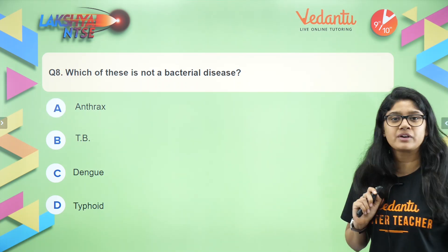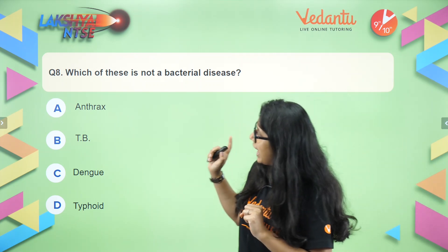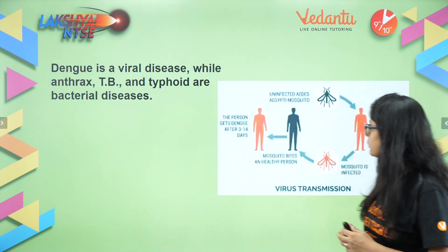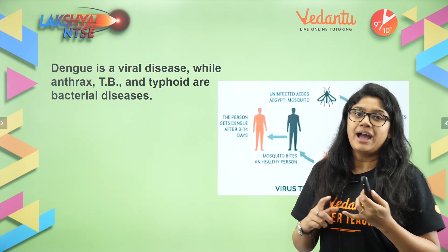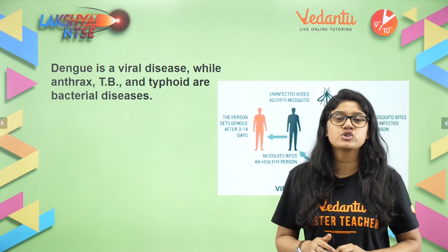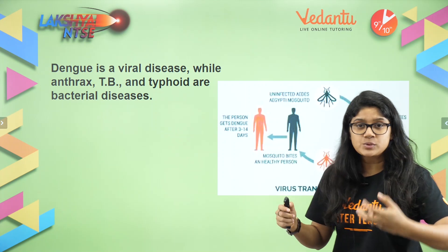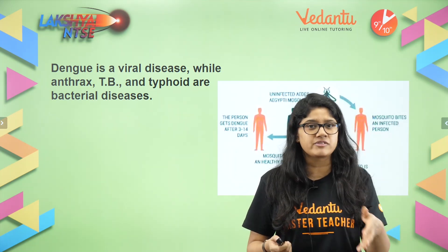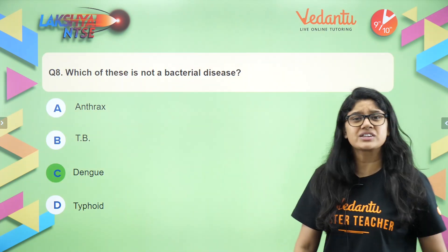Question number eight. Which of these is not a bacterial disease: Anthrax, TB, Dengue, or Typhoid? We know that Dengue is transmitted by the mosquito and is caused by a virus. Anthrax, TB, and Typhoid are bacterial diseases. Dengue is the one which is not a bacterial disease — it is caused by a mosquito bite. The right answer is Dengue.